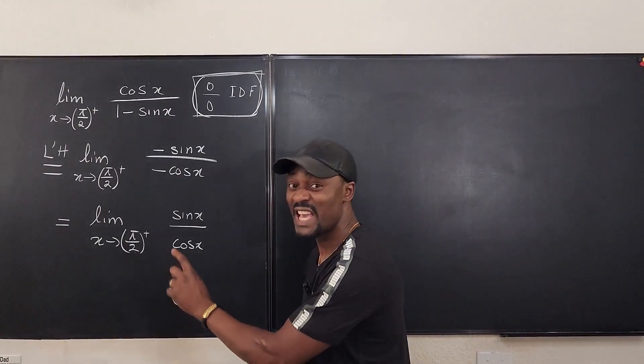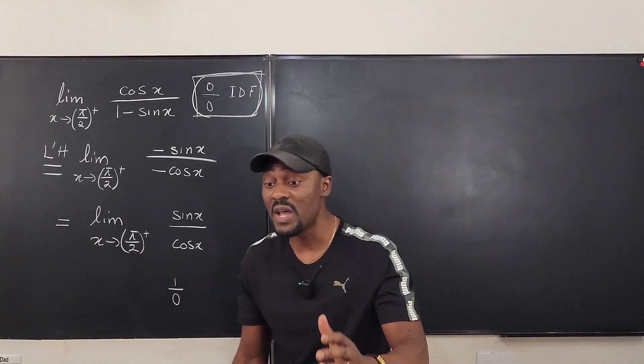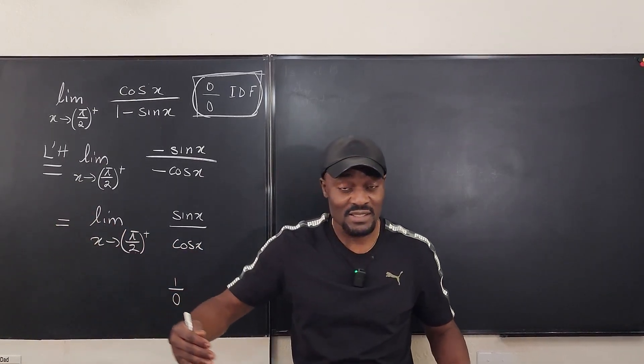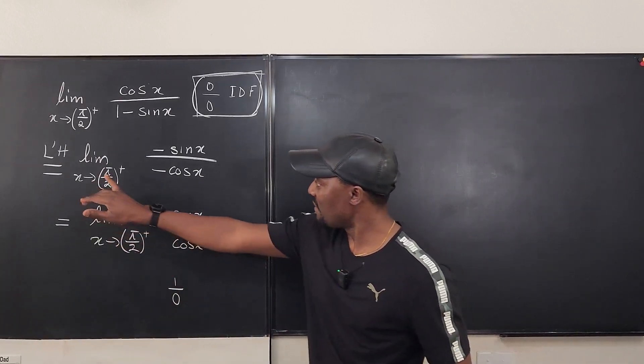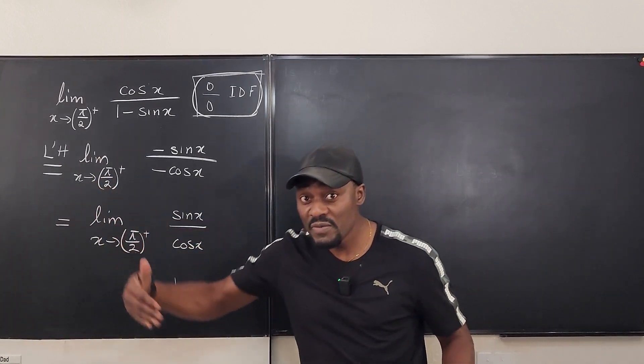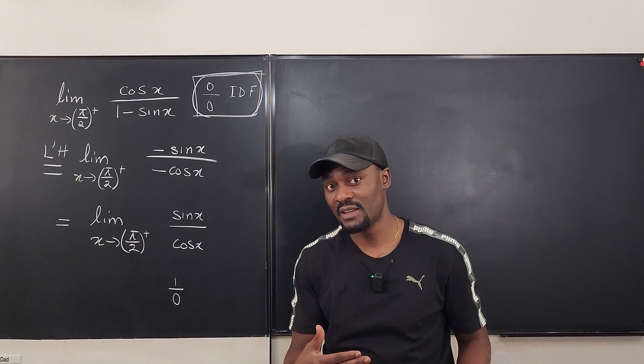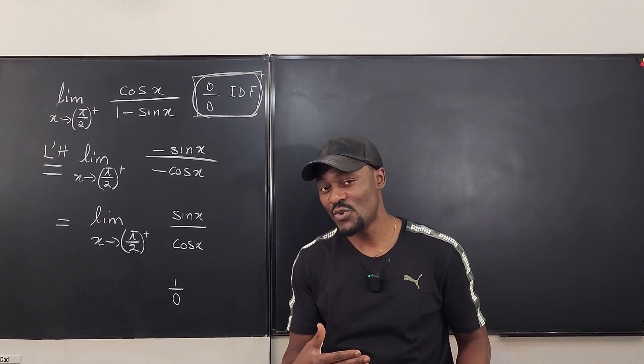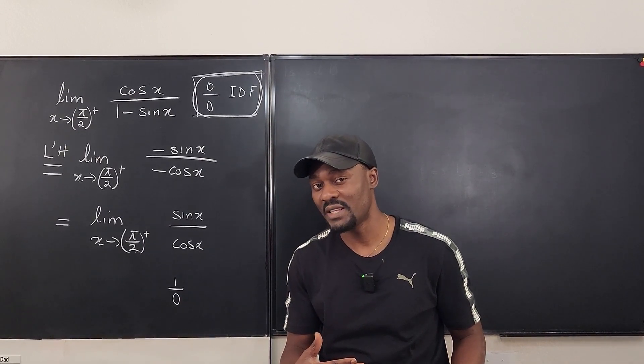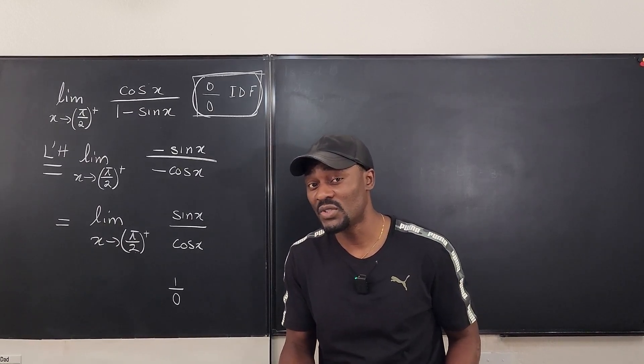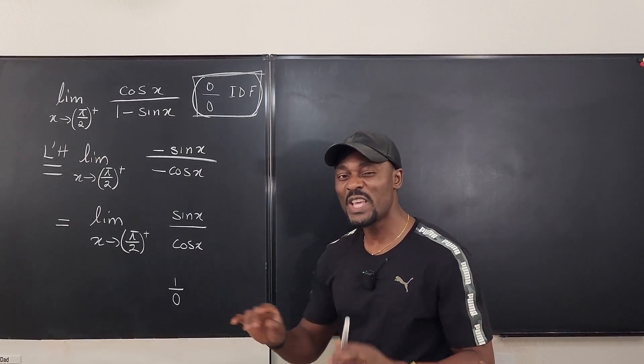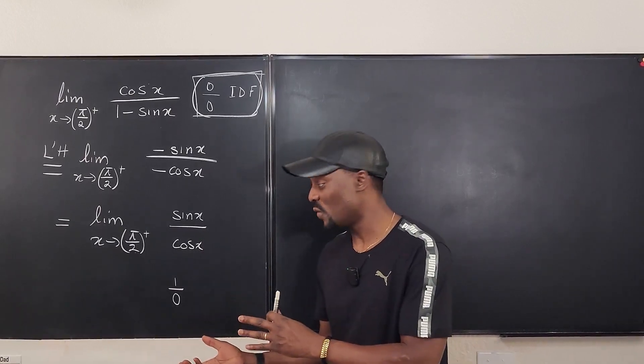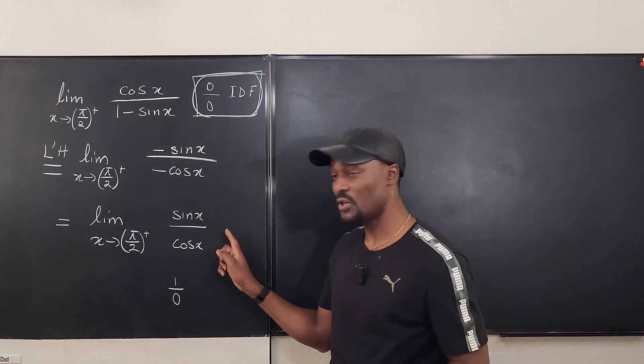Because 1 over 0 in a case of limit depends on whether what you get from the right-hand side and what you get from the left-hand side are the same. Now, if the question specifies that you're moving from the right-hand side, you have to check out what the graph looks like. If you don't know what the graph looks like, at least you have to know what the values will look like. So you can use anything. In fact, I'm going to show you in three ways how to decide what your answer is.